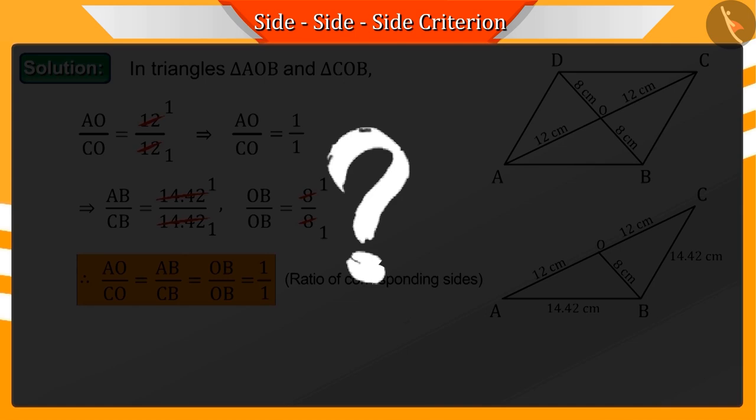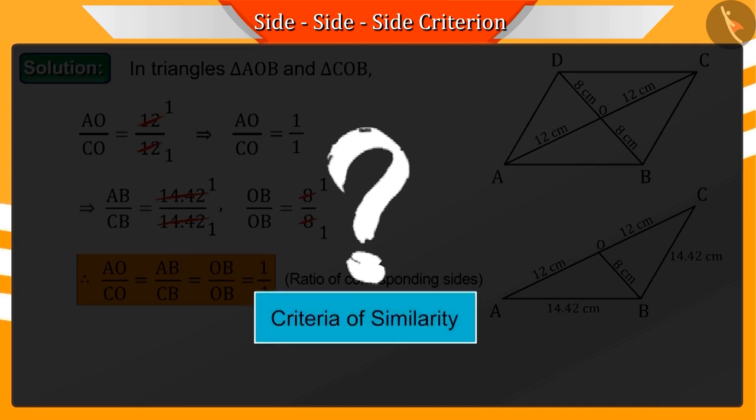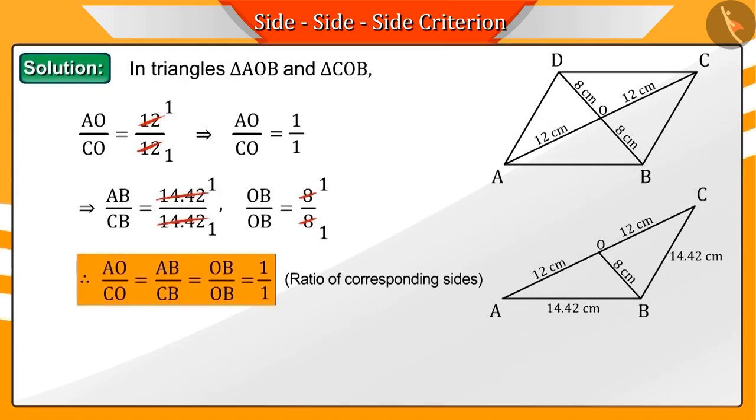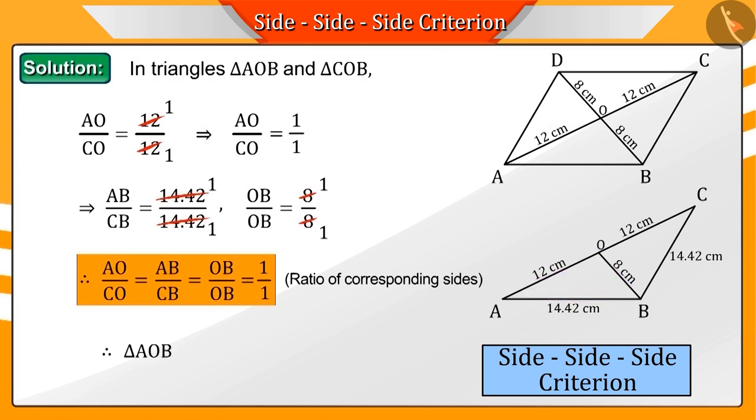Can you tell which similarity criterion is shown by this? Correct! This represents the SSS criterion. Therefore, triangles AOB and COB are similar.